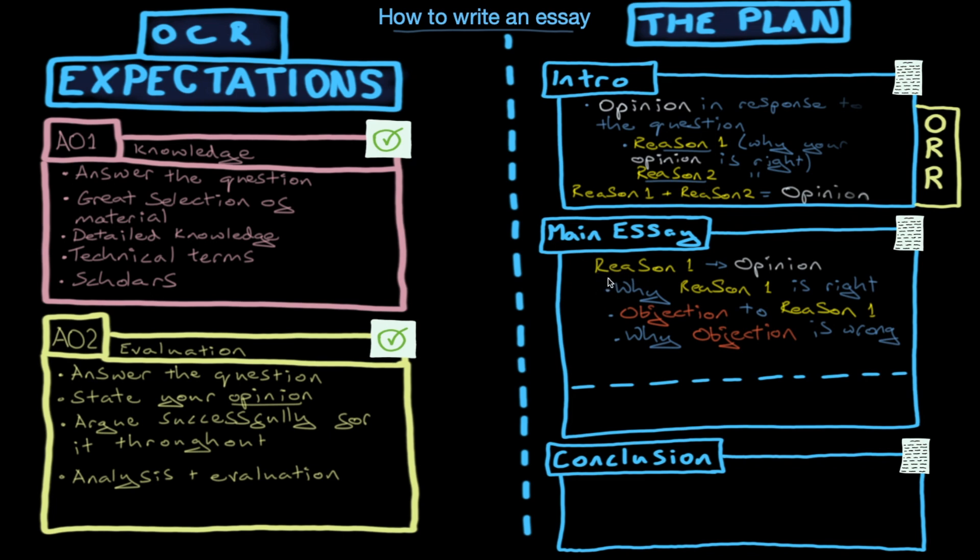So now what you've done is you've told me why your reason supports your opinion, why your reason is correct. You've examined an objection to your reason and you've shown me why that objection is wrong. And now you might end as you began with what your reason is and then why it leads to your opinion, which of course is in the words of the question, so you are continuing to answer the question. And then you want to kind of repeat this again for reason two. Reason two is really not getting a look in the plan, is it? For reason two or reason three or however many reasons you have, you repeat this and these form the main paragraphs of your essay.